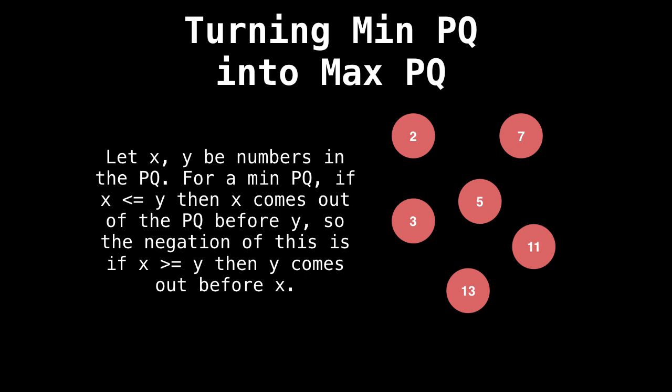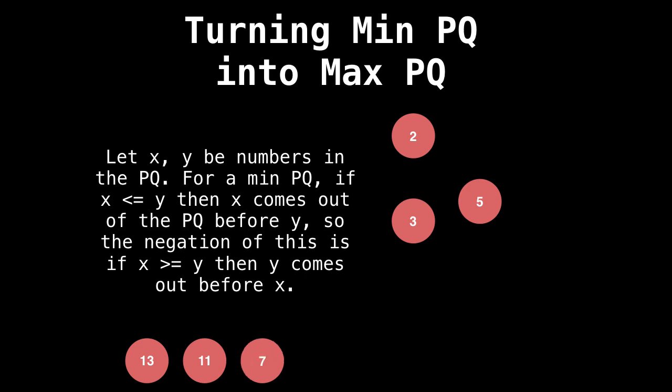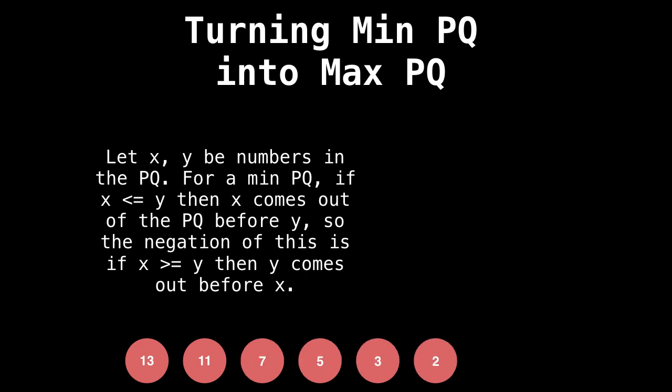So now let's see what happens when we pull all these elements out of the priority queue with our negated comparator. So first, we would get 13, because it's the greatest. And next comes 11, seven, five, three, and two.